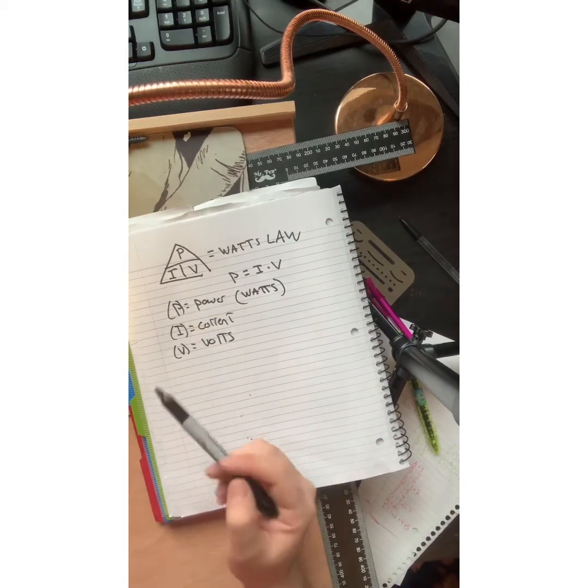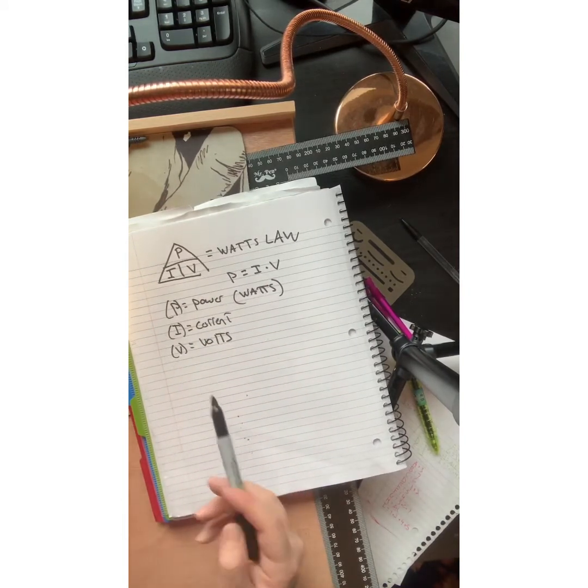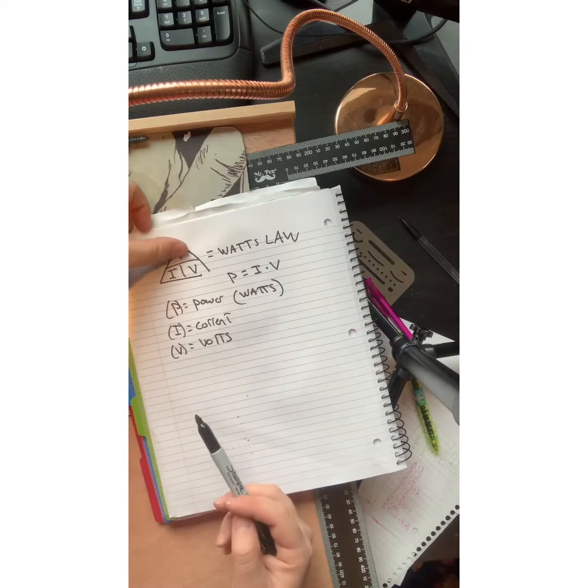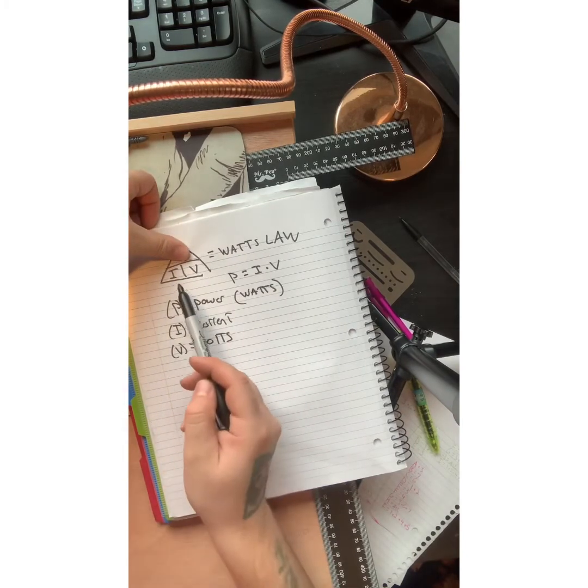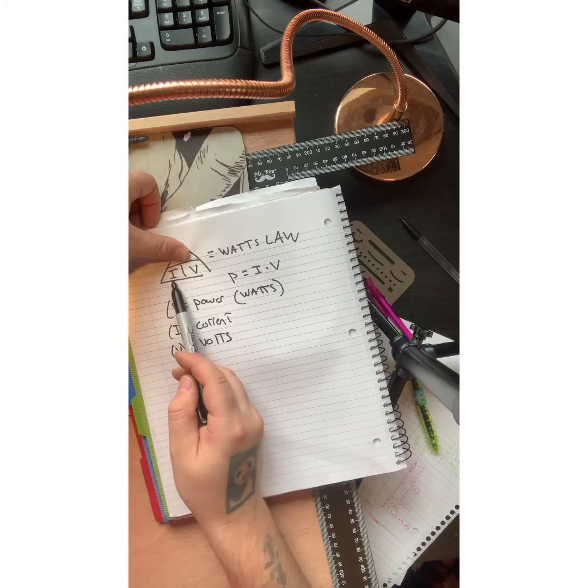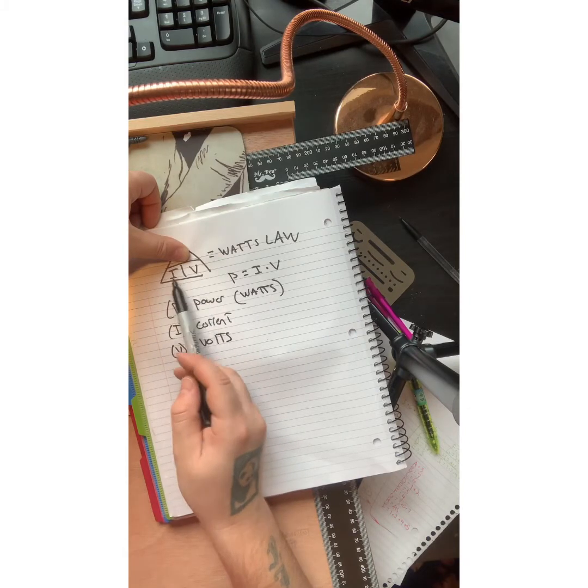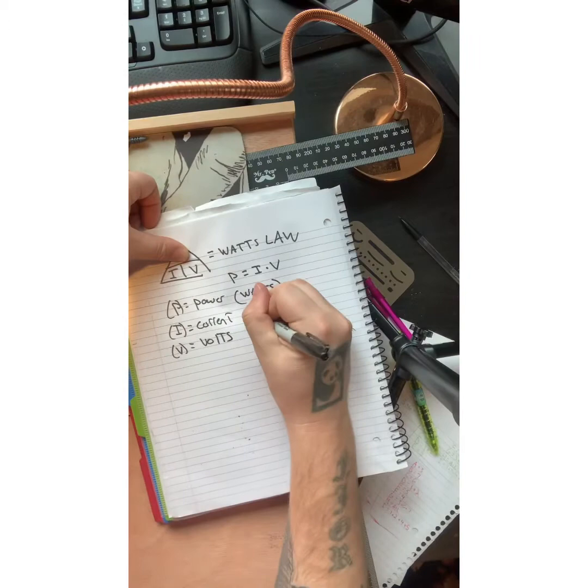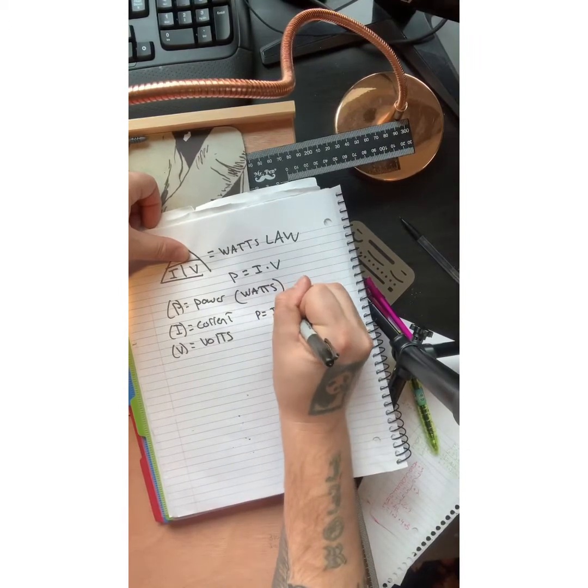So to memorize this and really use this equation effectively, say you want to find power, you can just cover the P, and if you have two letters next to each other, in this case current and voltage, you would just multiply those together. So P is going to equal I times V.